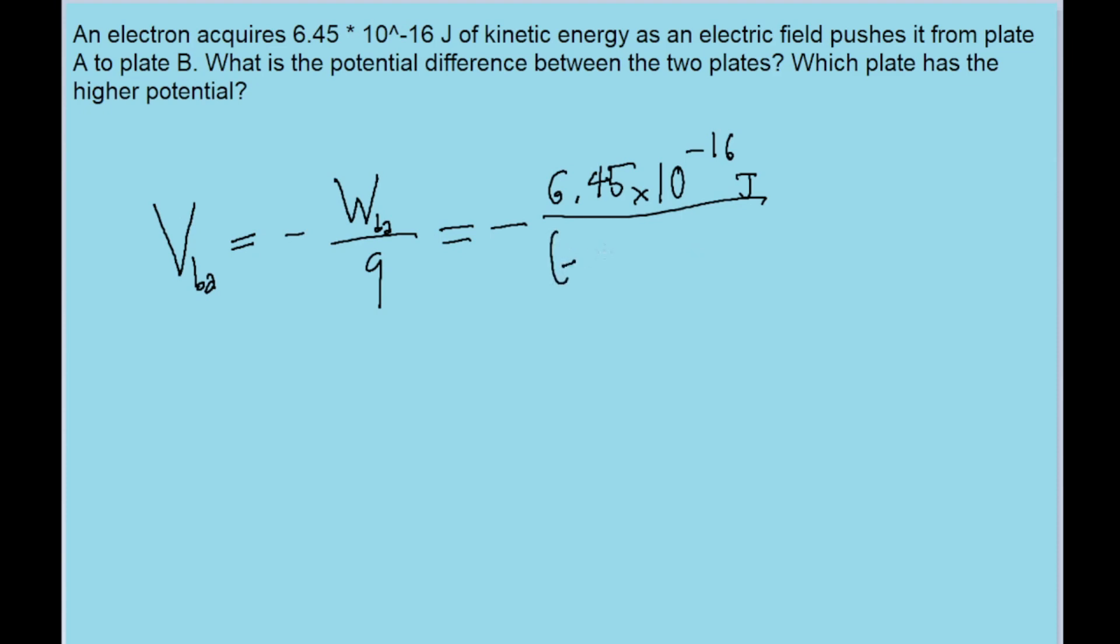And then we're dividing by the electron's charge, which is negative 1.60 times 10 to the power of negative 19 coulombs. Now if we put this into our calculator, then we find a potential difference of about positive 4,030 volts.